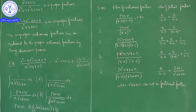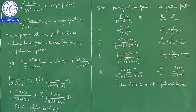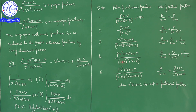When the denominator has both non-repeated and repeated linear factors — for example (x − a)²(x − b) — we write it as A/(x − a) + B/(x − a)² + C/(x − b). If the denominator is (x − a)²(x − b)², we write A/(x − a) + B/(x − a)² + C/(x − b) + D/(x − b)².